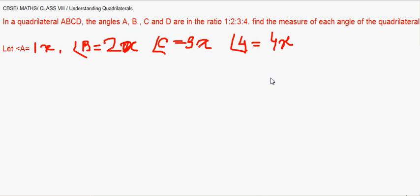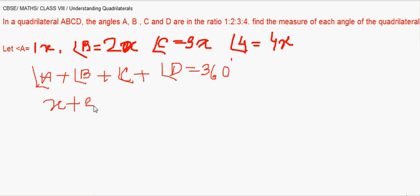Now we already know that the sum of the interior angles of a quadrilateral is 360. So angle A plus angle B plus angle C plus angle D, that's 360. So we will simply substitute A with x, B with 2x, C with 3x and D with 4x and that's equal 360.